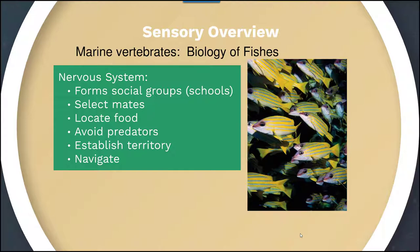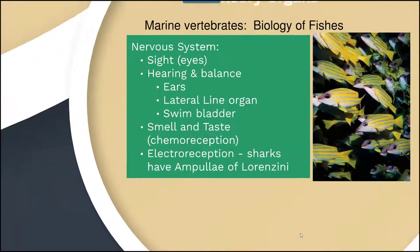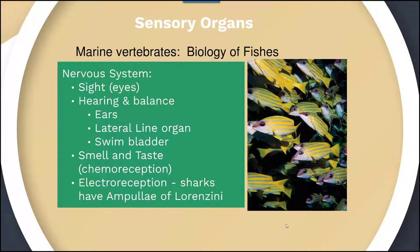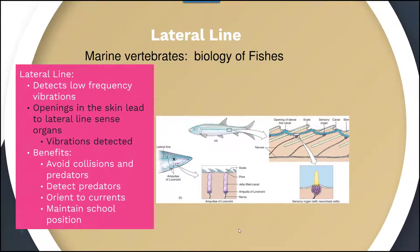Marine fish have a unique nervous system that allows them to form social groups or schools, select mates, locate food, avoid predators, establish territory, and navigate their environment. They do this through sight using their eyes, hearing and balance controlled by their ears, a lateral line organ, and a swim bladder. Fish also have a unique sense of smell and taste regulated through chemoreception, and sharks have electroreception.